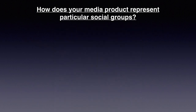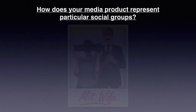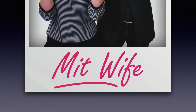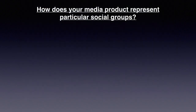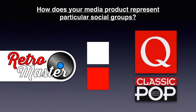I have made the magazine look old by having a vinyl record as the masthead and colours that the reader can relate to. For example, the colour of the logo of the band is hot pink, which is very iconic and symbolises the 80s. I have also gone with reds and whites to make the magazine conform to other music magazines targeted at an older generation, like Q and Classic Pop, which both have these colours.